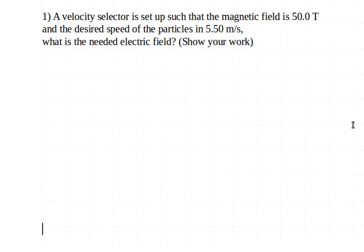A velocity selector is set up such that the magnetic field is 50.0 Tesla and the desired speed of the particles is 5.5 meters per second. What is the needed electric field? Show your work.